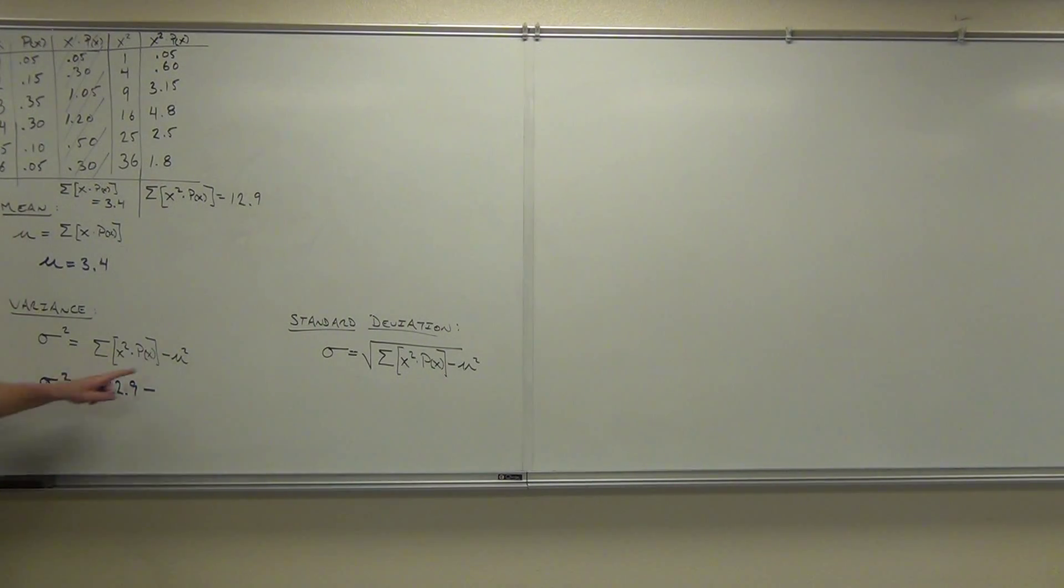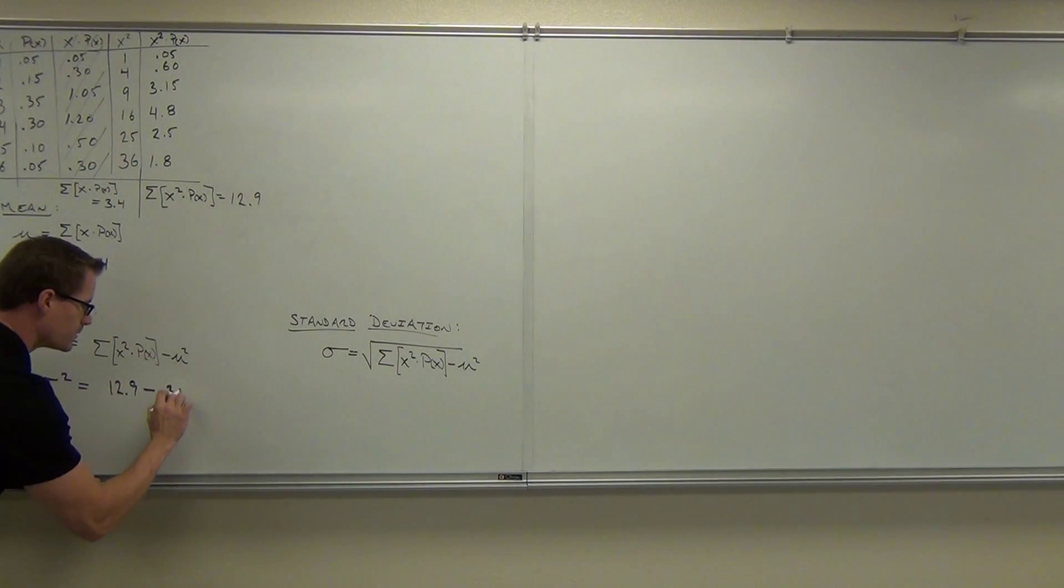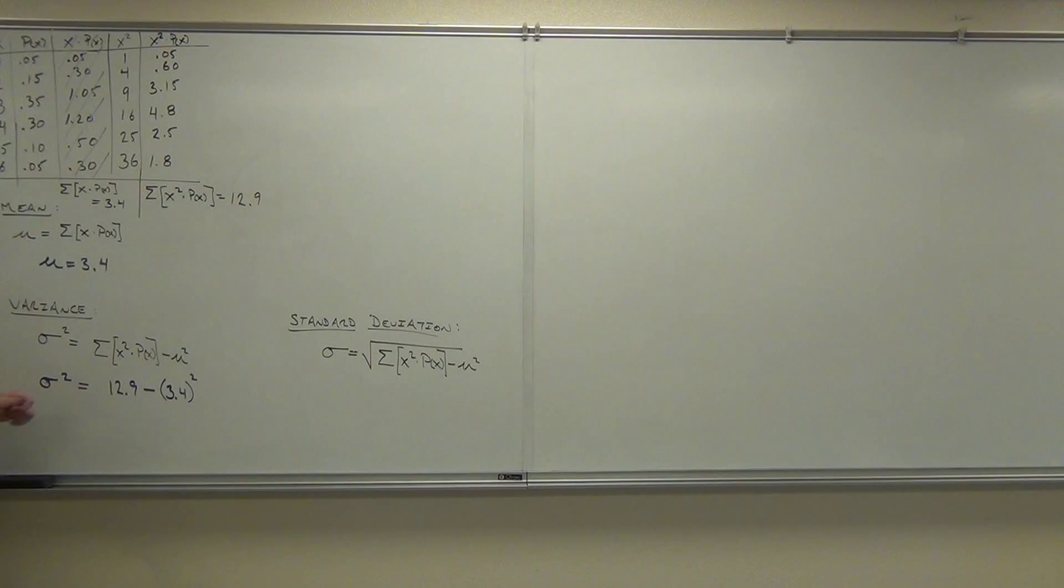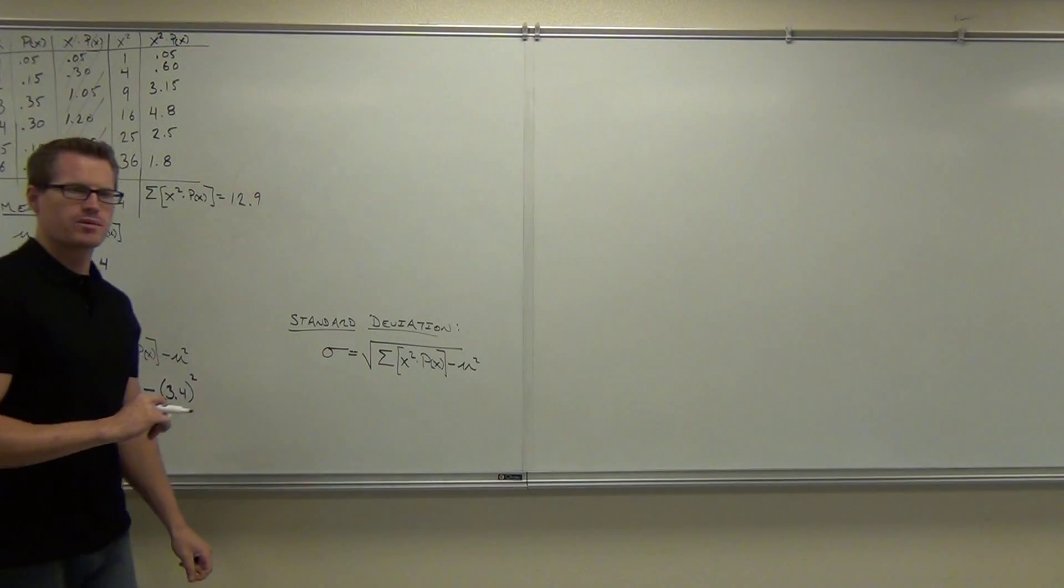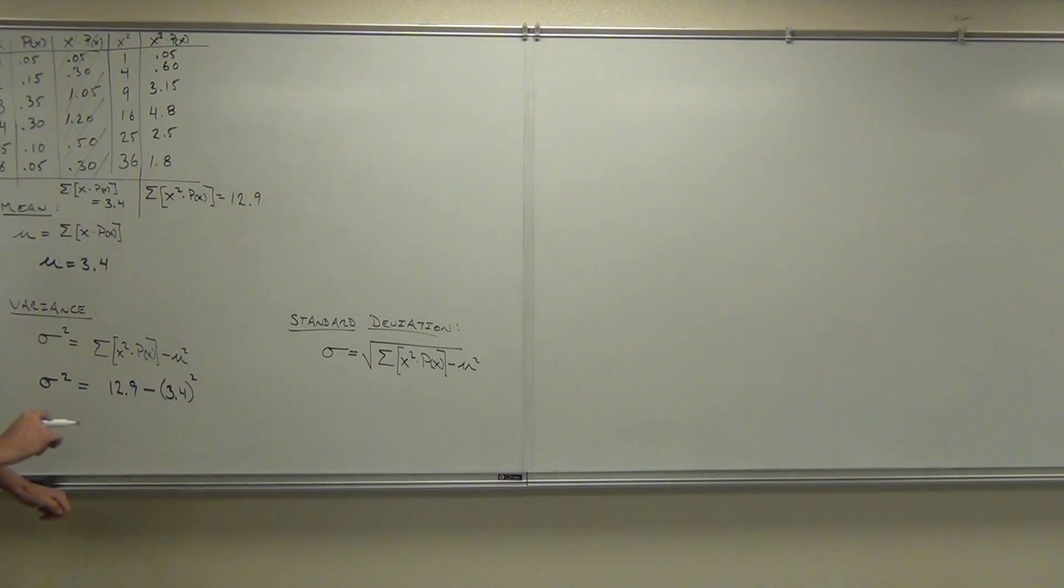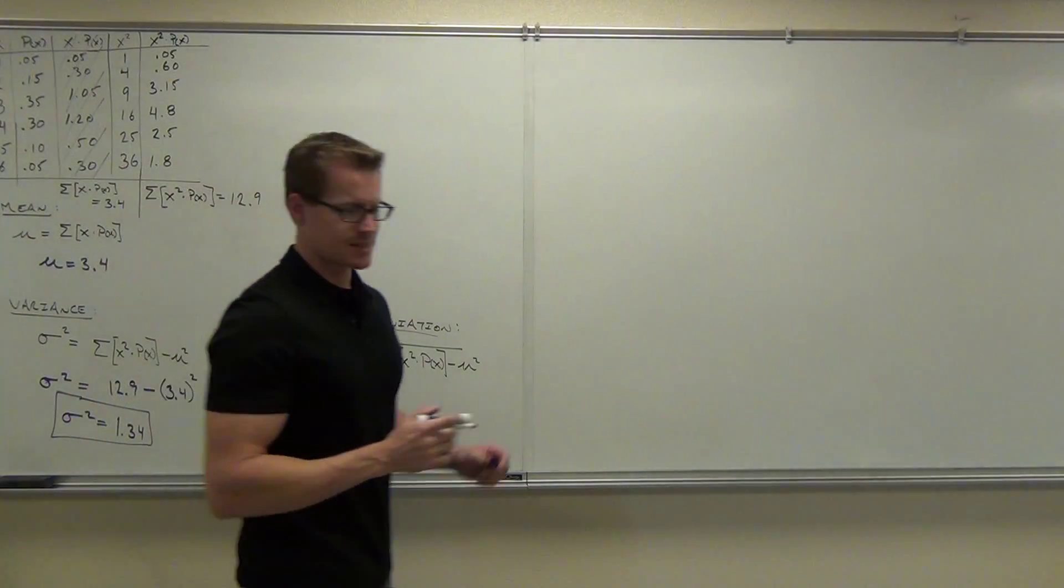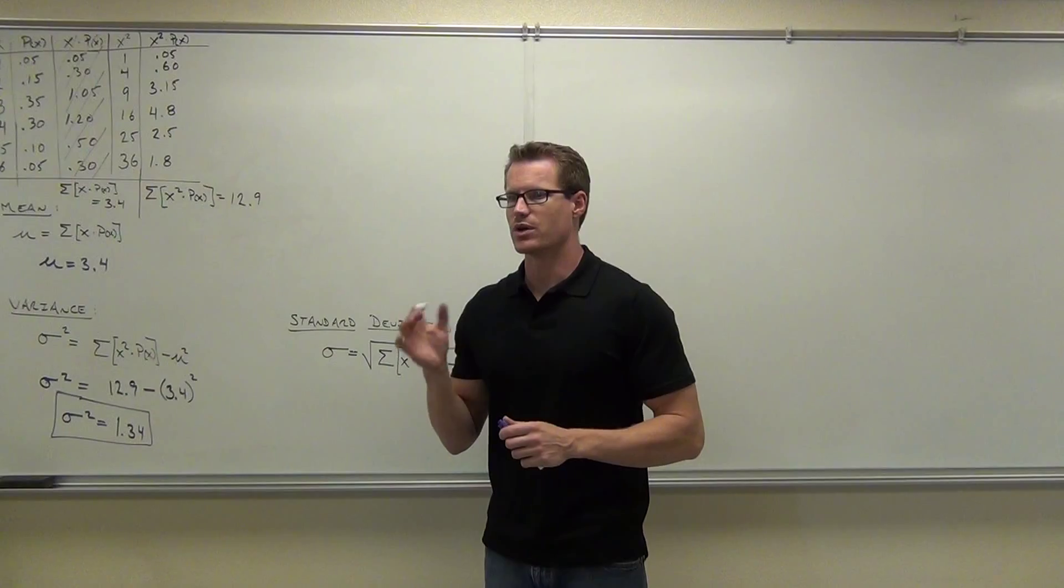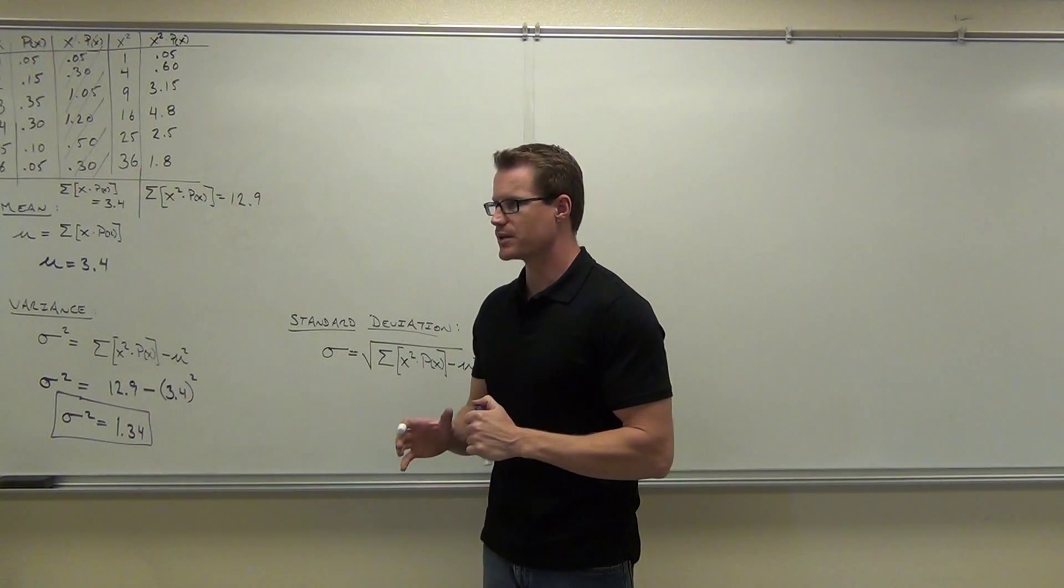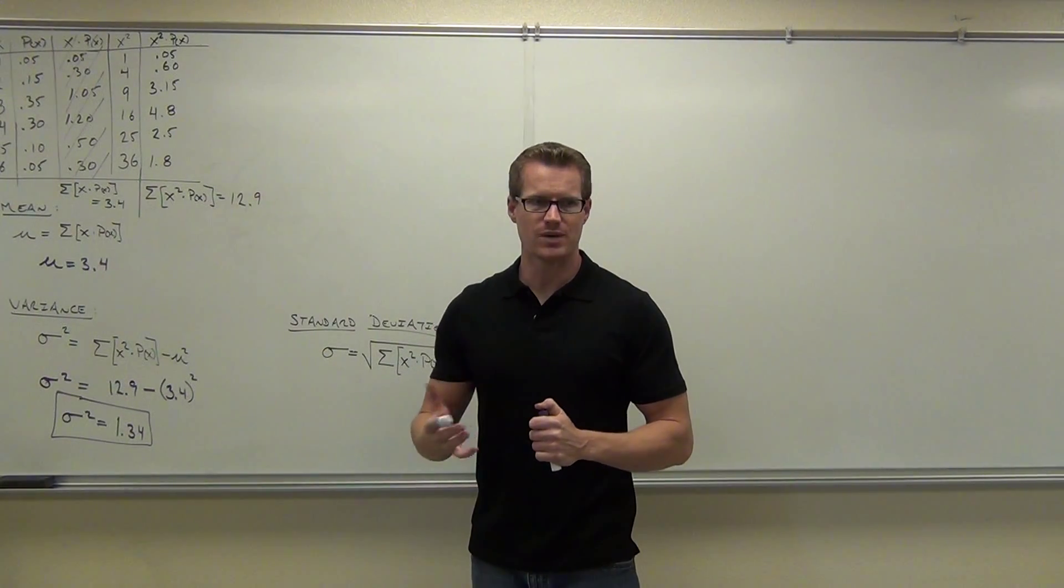But then it says to subtract something. This is why we had to find the mean first. It said you find that mean and you square it. We're going to take that away from 12.9. Do that for me. Do 12.9 minus 3.4 squared and tell me what our sigma squared or variance is. One point—1.34. Now the last couple seconds of class, I said that if we find the variance, inherently we already have the standard deviation. There's just one other thing that you have to do with it.